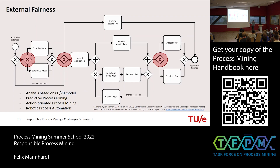Even in analysis using an 80-20 model there is bias: ignoring infrequent behavior means you are discriminating against people who follow infrequent paths. Going back to the Kinderopvangtoeslag example — if you immigrate to the Netherlands, until recently you had to fill out a 50-page paper form, while Dutch people could just click online. There is a trade-off when you optimize processes: infrequent users get ignored. In the meantime this has improved and works online now.